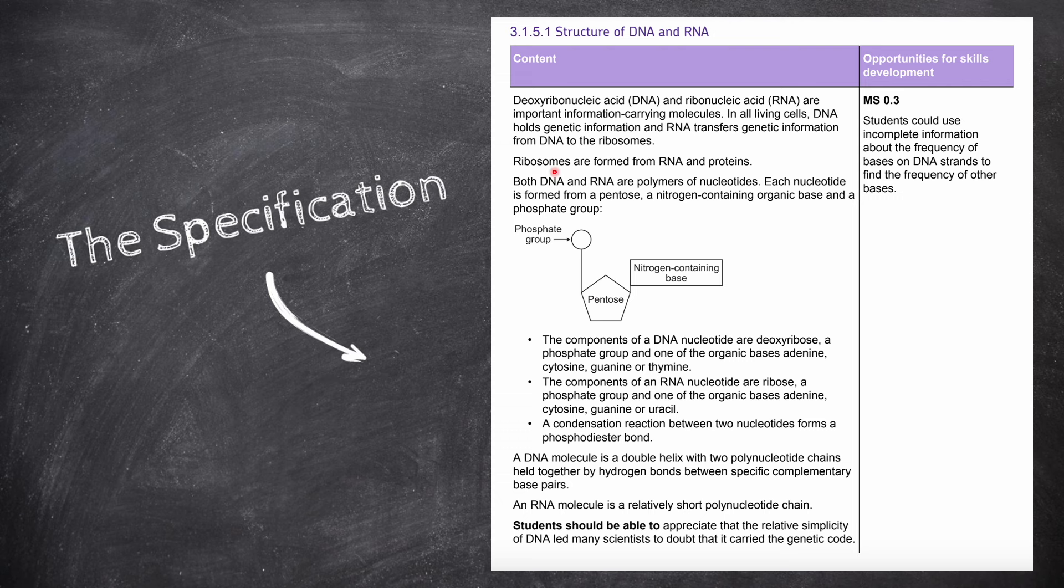We should know that ribosomes are formed from RNA and proteins. Then we should know that DNA and RNA are polymers of nucleotides, and we should know the structure of a single nucleotide. We should know the final structure of a DNA double helix, and that an RNA molecule is a relatively short polynucleotide chain. Finally, the specification says that we should be able to appreciate that the relative simplicity of DNA led many scientists to doubt that it carried the genetic code.